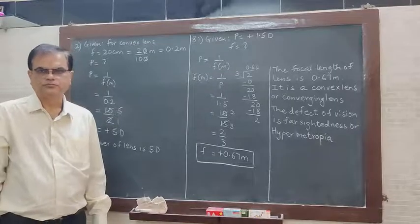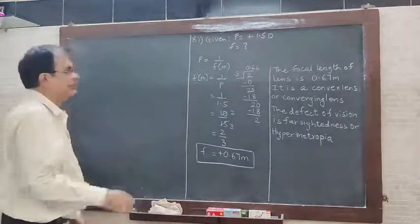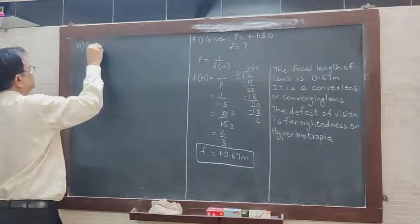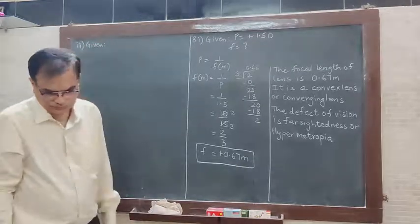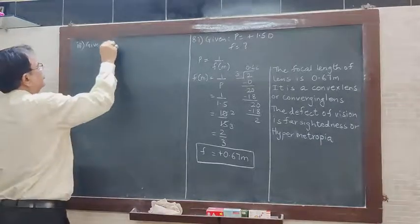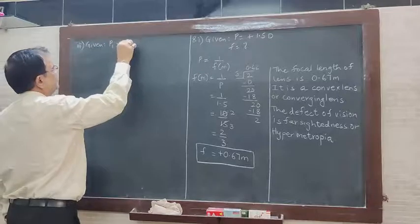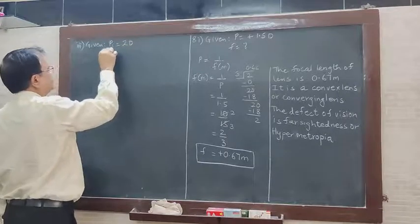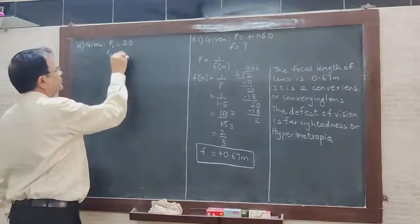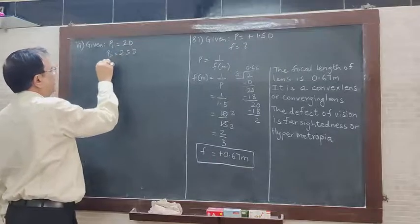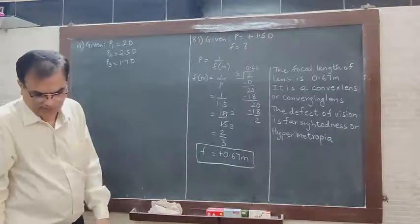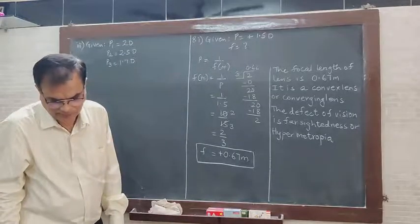Now we do the third question. Given: three lenses have powers 2, 2.5, and 1.7 diopters. So P1 is equal to 2 diopters, P2 is equal to 2.5 diopters, and P3 is equal to 1.7 diopters. They are kept touching in a row.